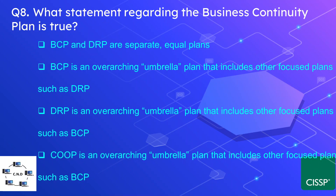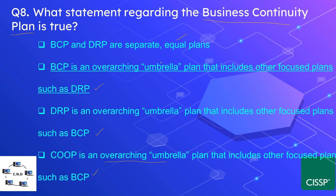Question number 8: What statement regarding the business continuity plan is true? The options are: BCP and DRP are separate but equal plans; BCP is an overarching umbrella that includes other focus plans such as DRP; DRP is an overarching umbrella plan that includes other focus plans such as BCP; or COOP is an overarching umbrella plan that includes other focus plans such as BCP. The correct option is that BCP is an overarching umbrella plan that includes other focus plans such as DRP. BCP is the superset — the bigger plan that also includes the DRP plan.